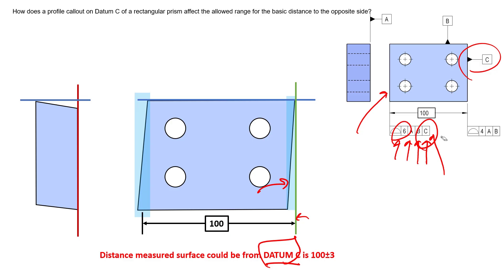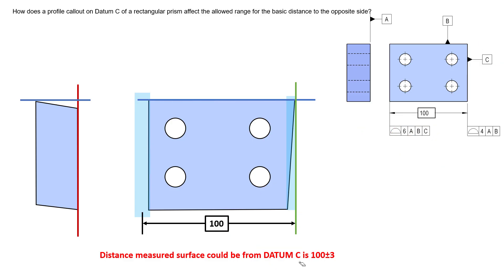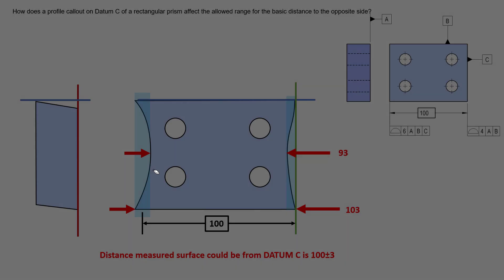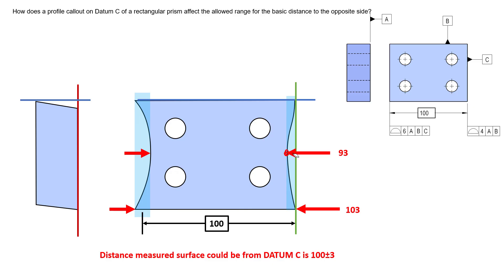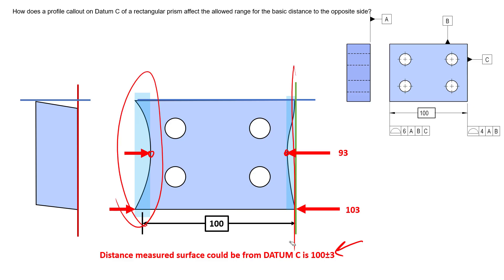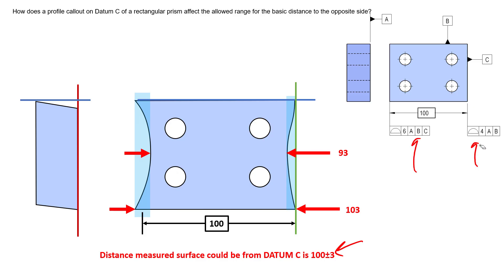The surface can exist at various positions as long as it falls inside the tolerance zone located from datum C. If we take a caliper and measure element to element from one surface to the other, it's not going to be 100 plus or minus three, because we're measuring one element to another — not controlling the surface location with respect to the datum. This is a useful sanity check for designers to ensure applied tolerances don't create unforeseen issues.